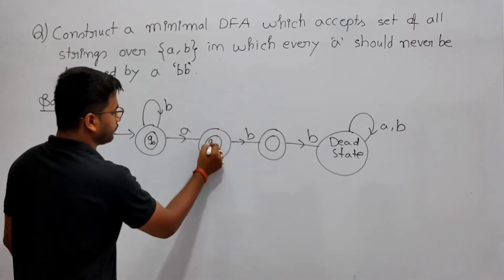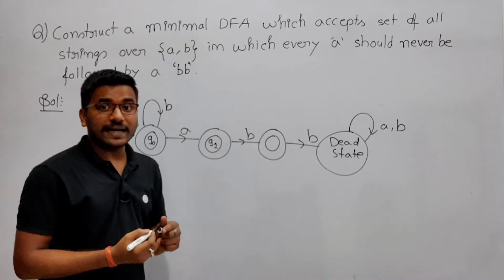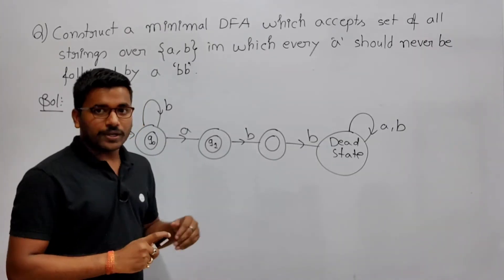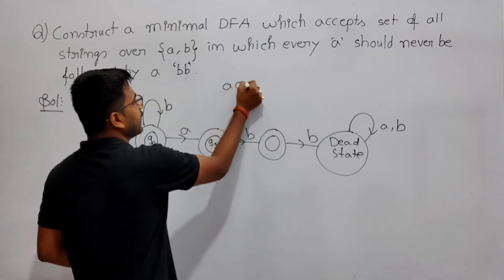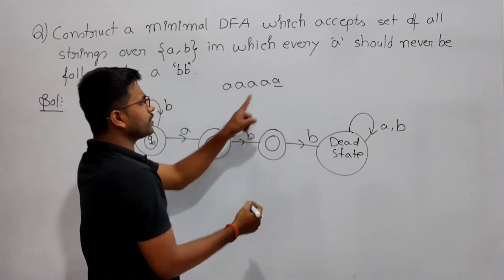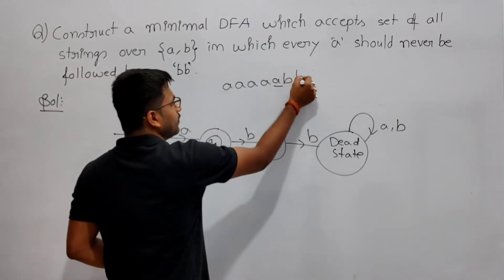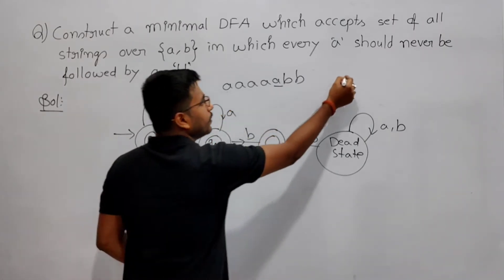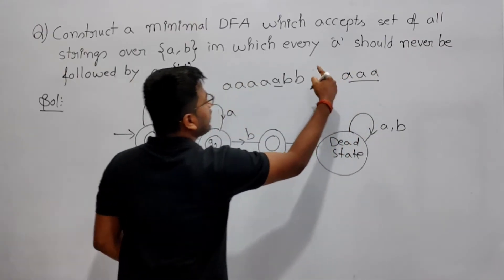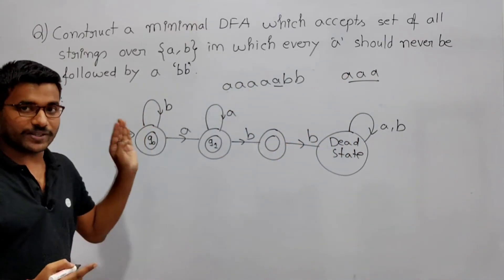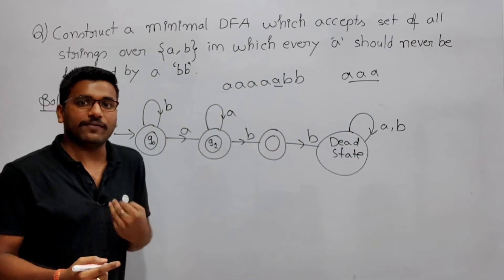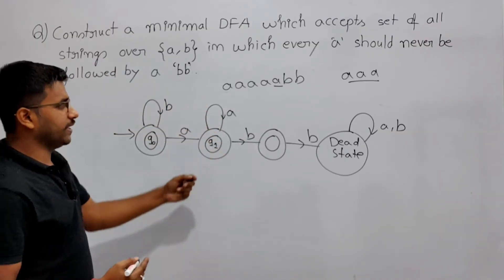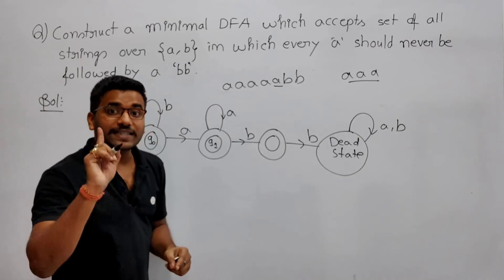Now you reach state q1. This state says that you have got at least one 'a'. If you are again getting 'a', then any number of a's — b stays there. Because after 'a', if you again get 'bb', you have to reject it. Any number of a's belongs to the language, because 'a' should never be followed by two b's, but any number of a's is fine. So for input 'a' from q1, we stay in q1.